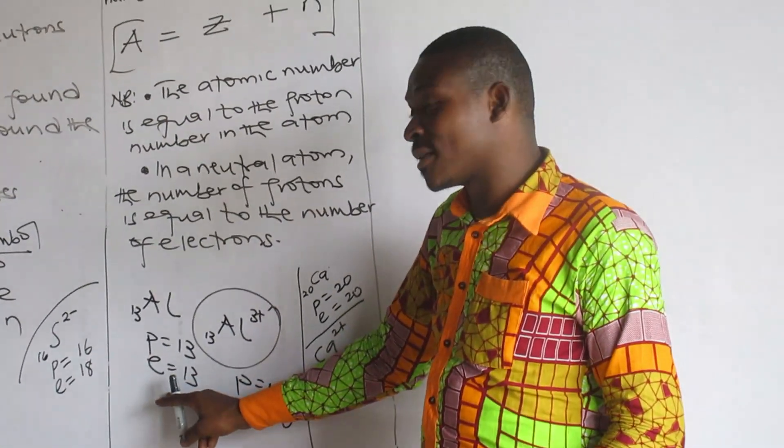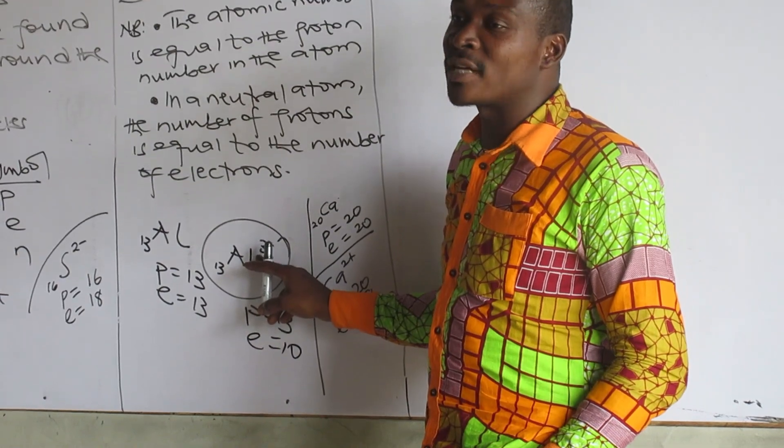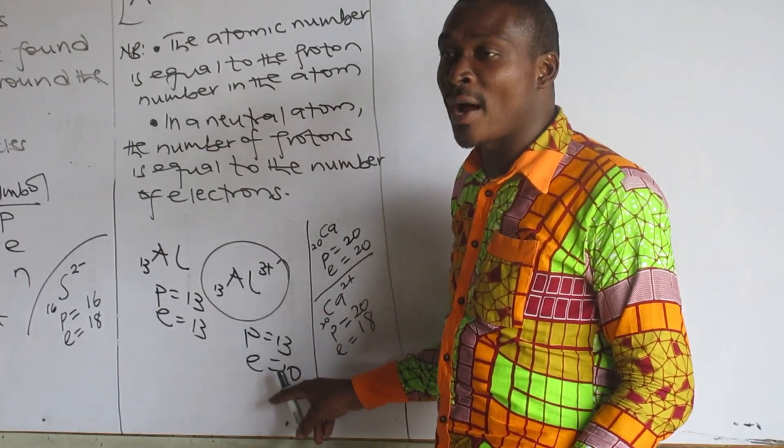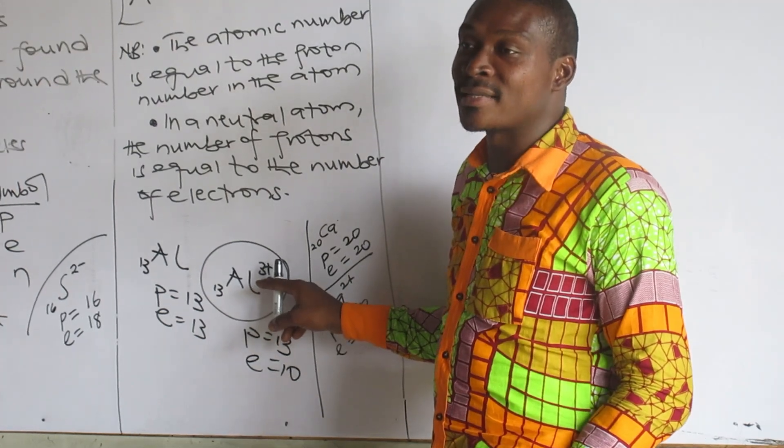Aluminium has 13 protons, but the electrons will be only 10. Why? Because it lost 3 electrons, then it's a cation.